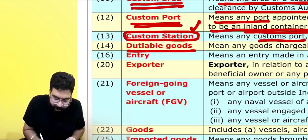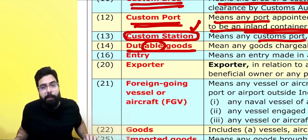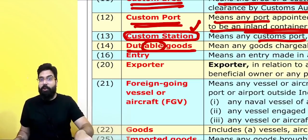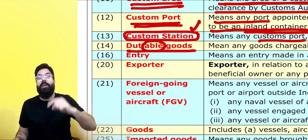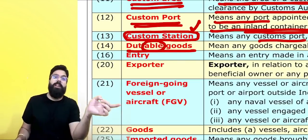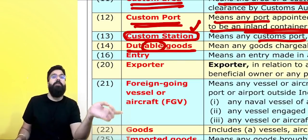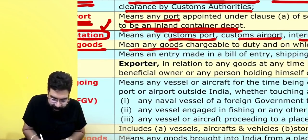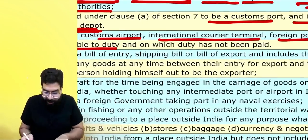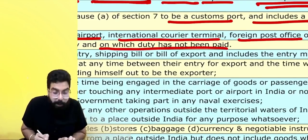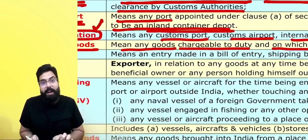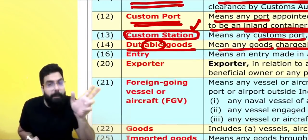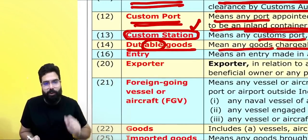What is dutiable? Dutiable means those goods which are chargeable to duty but on which duty has not yet been paid, because once duty is paid they become duty-paid goods. Dutiable means any goods chargeable to duty on which duty has not been paid — after payment of duty, they are no longer dutiable, they are duty-paid goods.